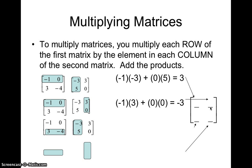Do it a third time. This time, row two in matrix one gets multiplied with column one in matrix two. Three times negative three, plus negative four times five adds to get you negative 29. And as you're starting to see with the pattern here, I hope we stick that in row two, column one of the product.